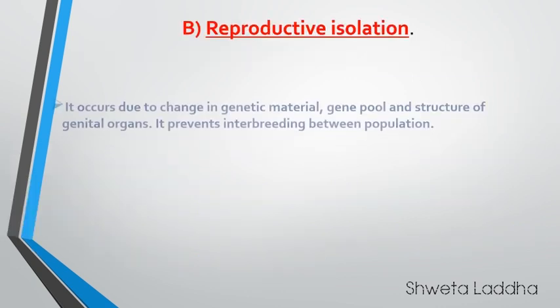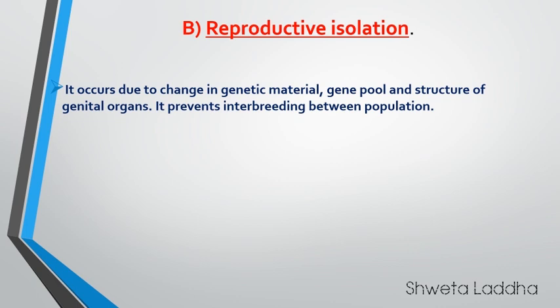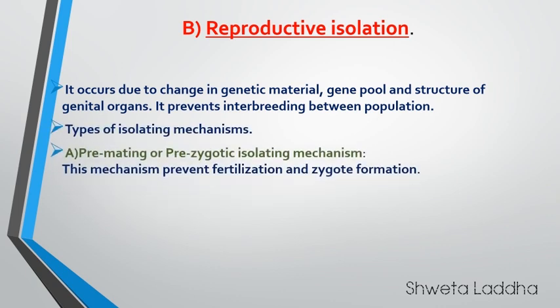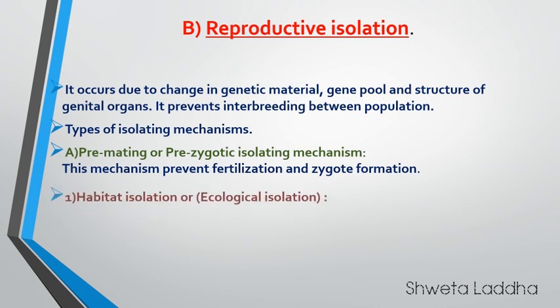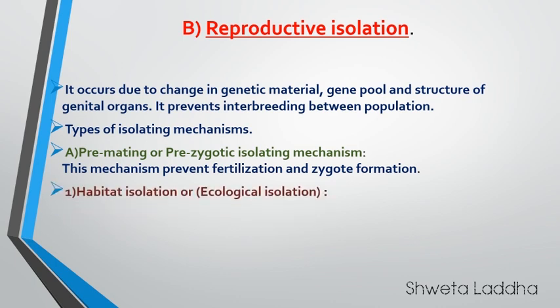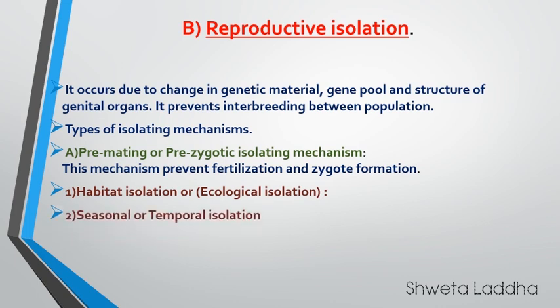The second type is reproductive isolation. It occurs due to changes in genetic material, gene pool, and structure of genital organs, and it prevents interbreeding between populations. There are two types of reproductive isolation mechanisms: premating (prezygotic) and postmating (postzygotic). Premating is of four types: habitat isolation (also called ecological isolation), seasonal or temporal isolation, ethological isolation, and mechanical isolation.